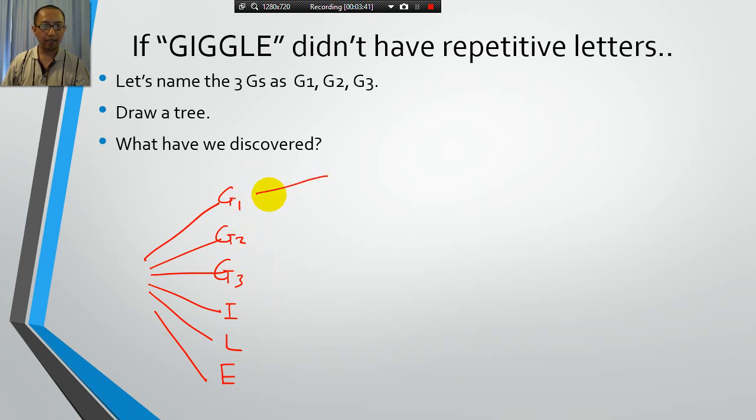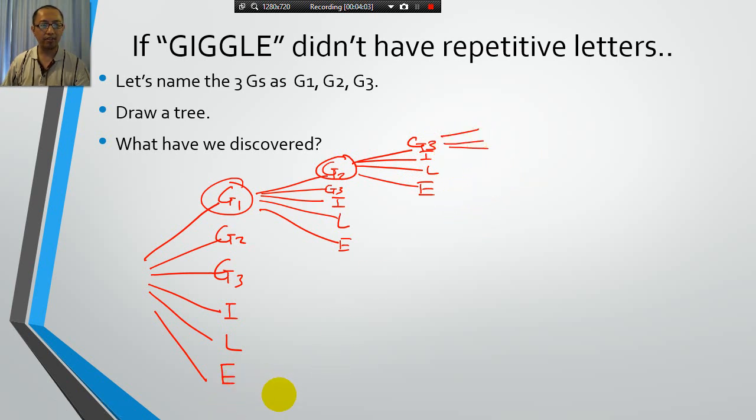So, if you keep going like this. And let's say I pick G1, so I have G2, G3, I, L, E left. And then let's say you pick G2, then you have G3, I, L, E remaining. So, you keep going down the tree. It's still going to be 6 times 5 times 4 times 3 times 2 times 1 ways, which is 720 ways.